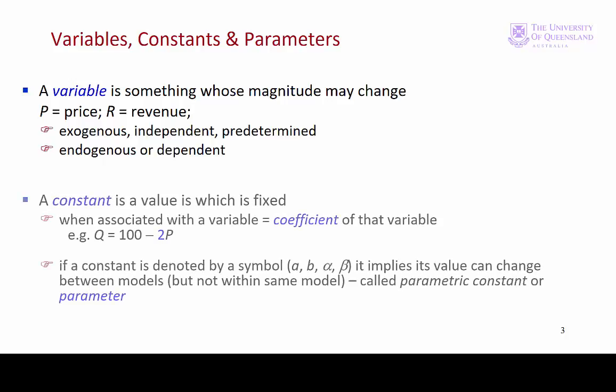As well as variables, we have constants. These are values that don't change. Where a constant is associated with a variable, for example, here we have q = 100 - 2p. The 100 is a constant.